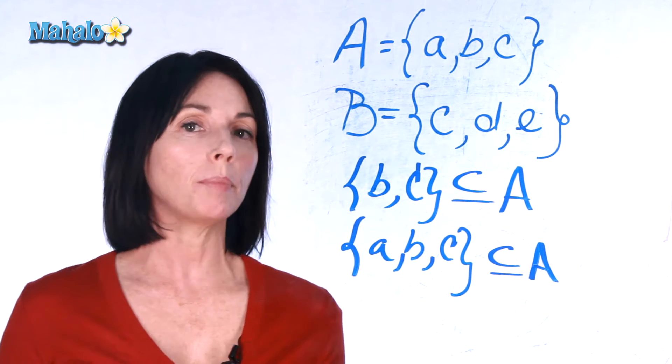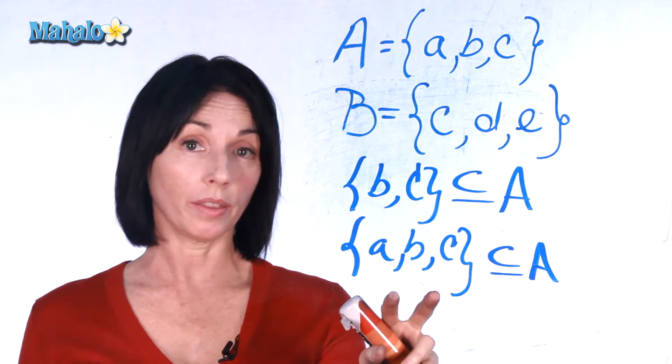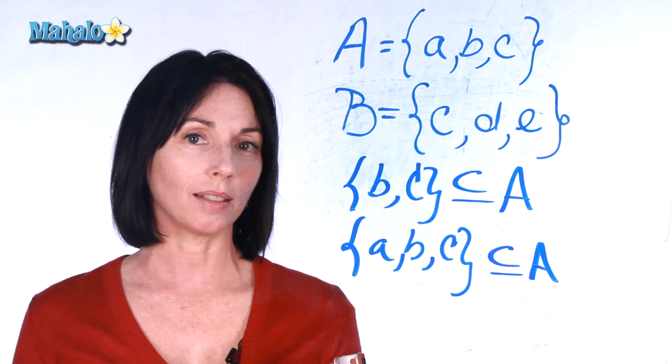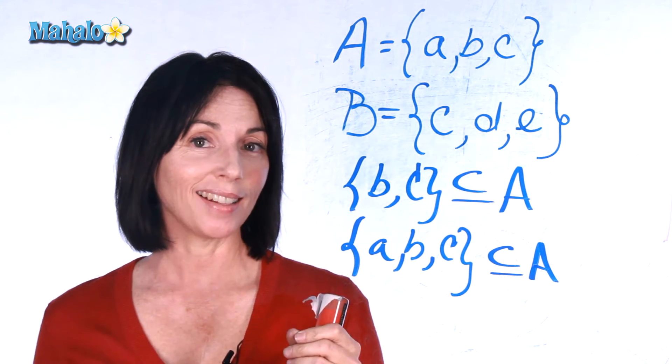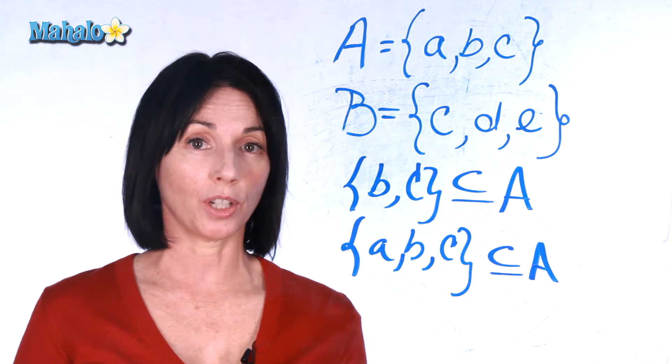So a subset means either all of the elements that exist in the original set are in the subset, or just some of the elements that exist in the original set are in the subset. Now a proper subset is one that only contains some of the elements of the original set.